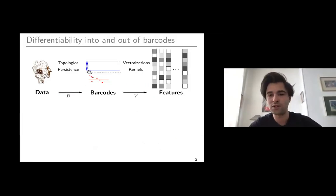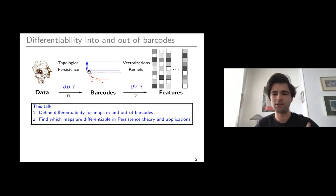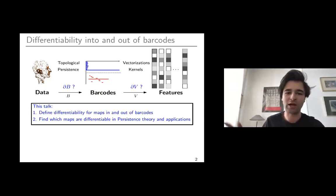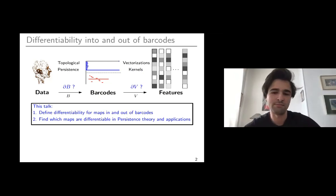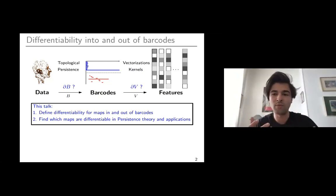As a first slide in persistence theory, this is almost mandatory, right? We have a manifold of data, we can get barcodes using some kind of sub-level set persistent homology, and then we have a map out of barcodes to get back to a Hilbert space where everything is convenient. This talk is about making sense of the differentiability of the first map going into barcodes and the second map going out of barcodes.